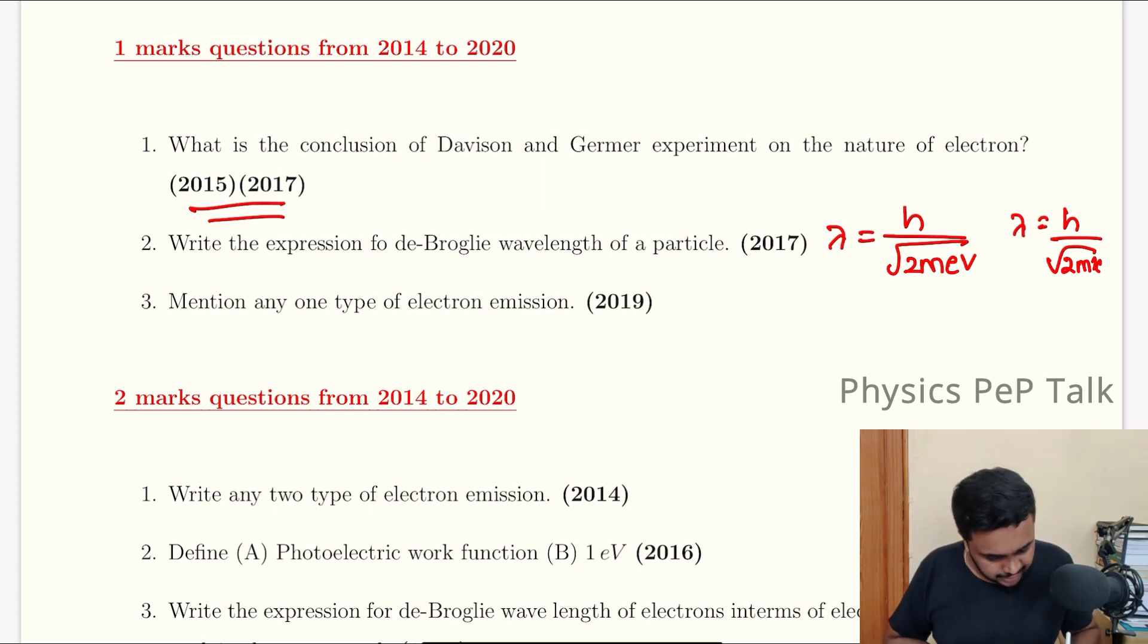I prefer the equation in terms of accelerating potential. Now, mention any one type of electron emission. Electron emission - we have thermionic emission, heat applied to remove electrons. We have photo emission, light-induced electron emission. We have field emission, electric field applied to remove electrons. Those are the types of emission.